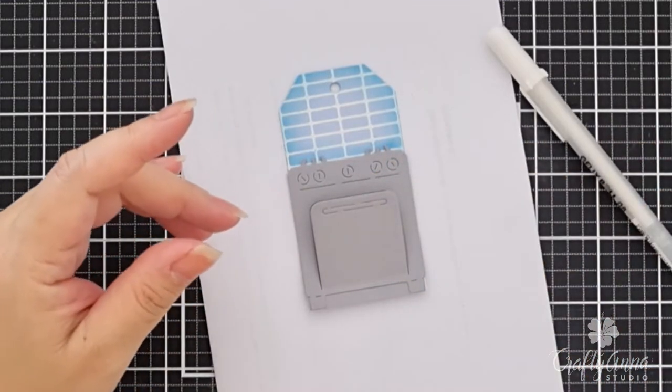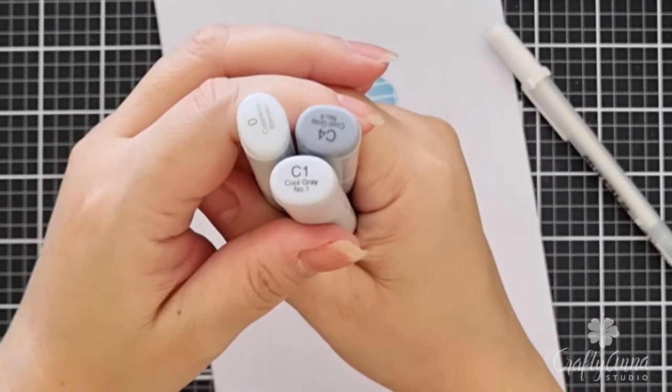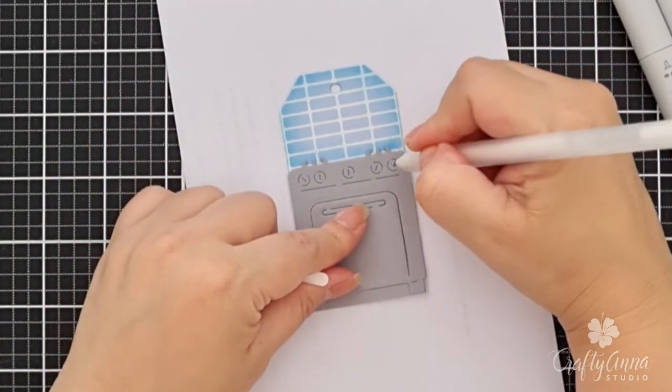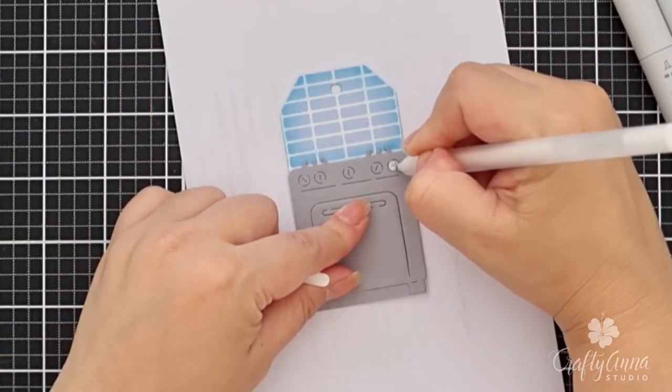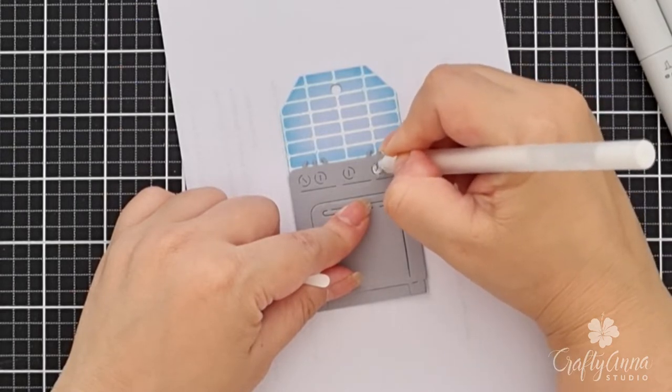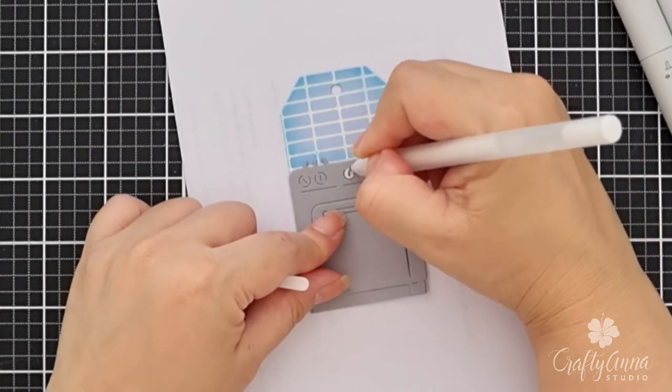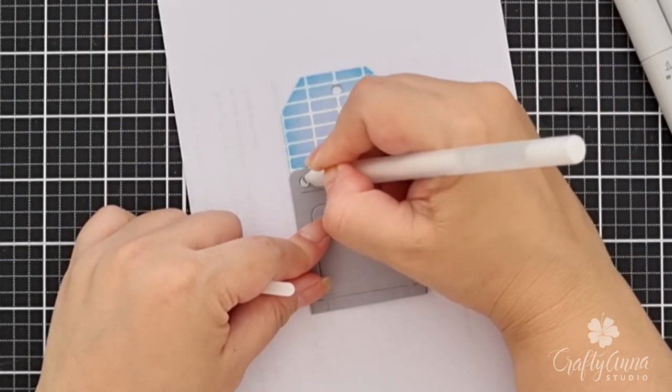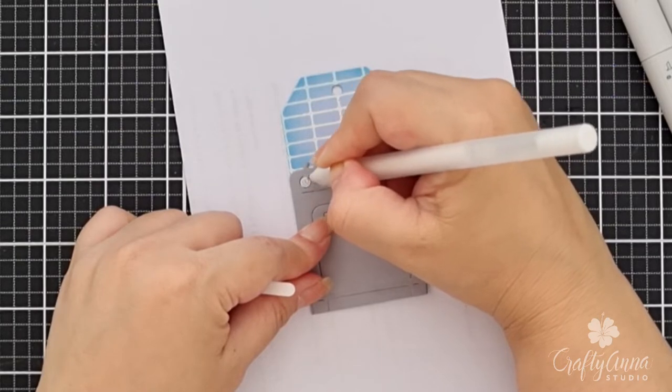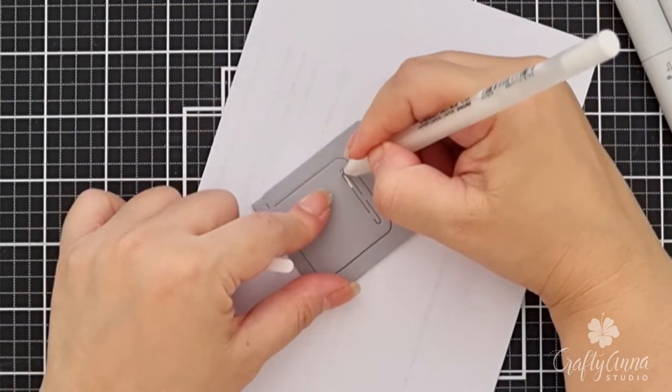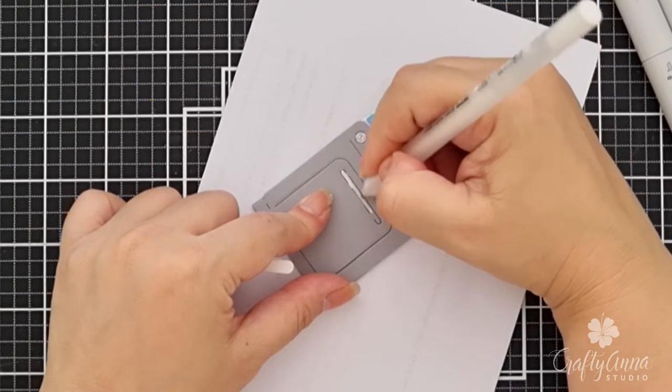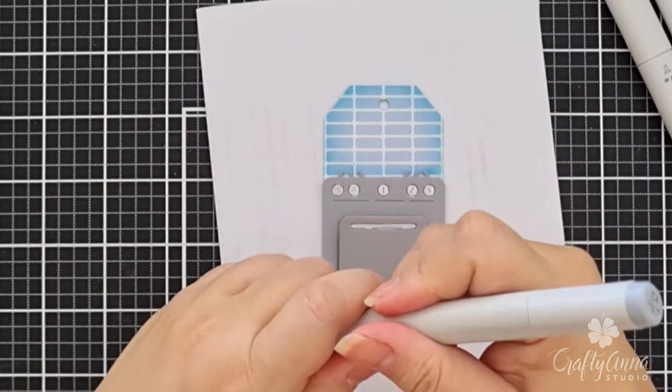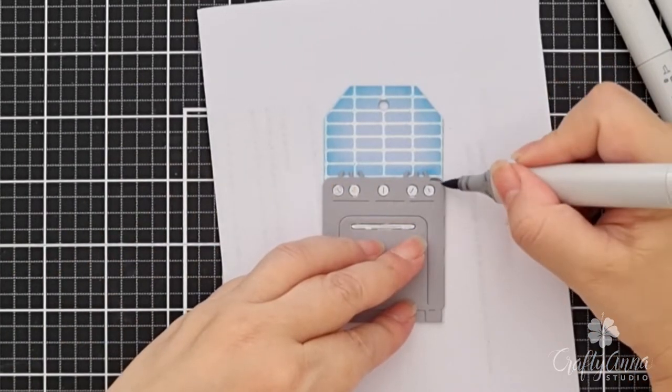Next, I will do some quick coloring using a white gel pen and cool grey Copics. First, I will color the knobs and the oven handle with white. Then I will use C4 to outline the oven details.